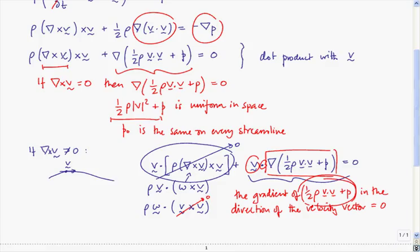So that's why you can always apply Bernoulli along streamlines, even when curl of v is not equal to zero. Of course, this only works in inviscid flow. In viscous flow, you can't apply Bernoulli because you lose mechanical energy through the action of viscosity.